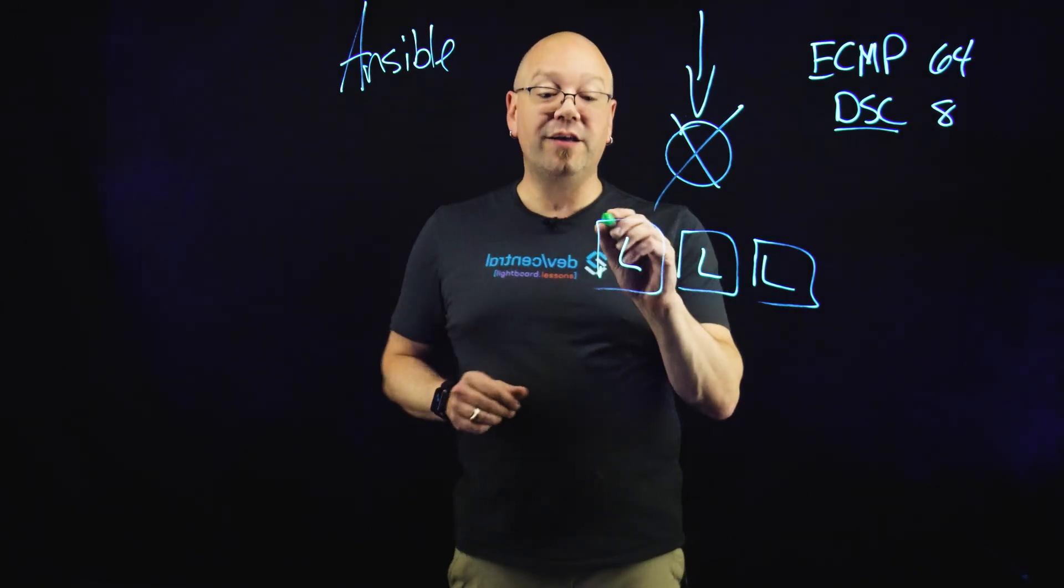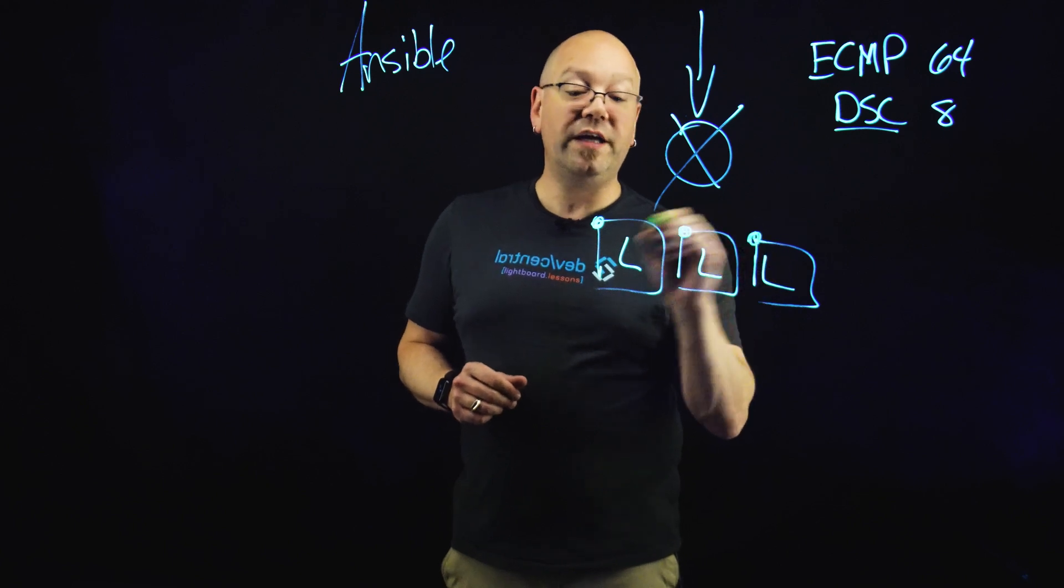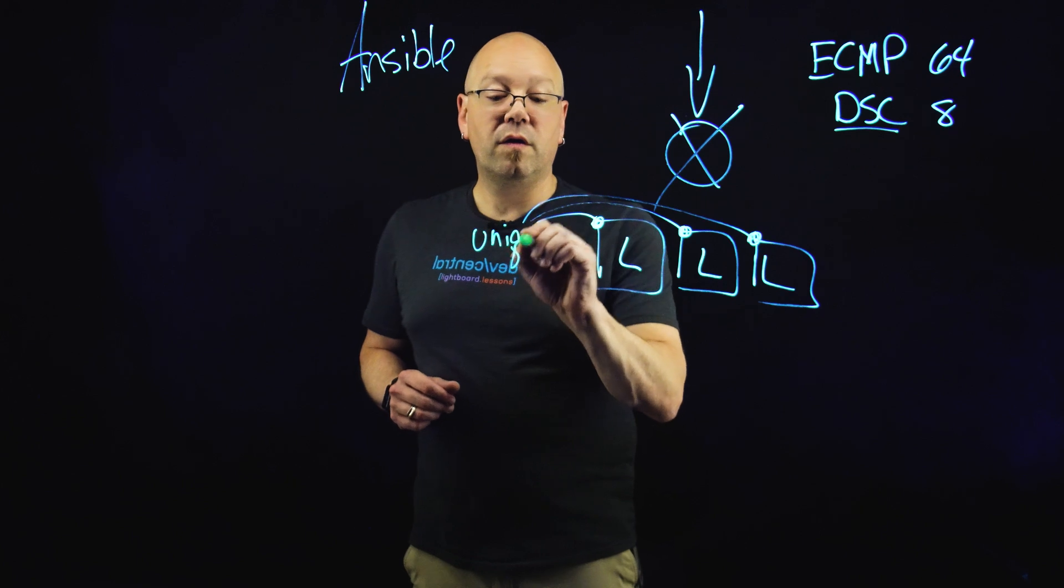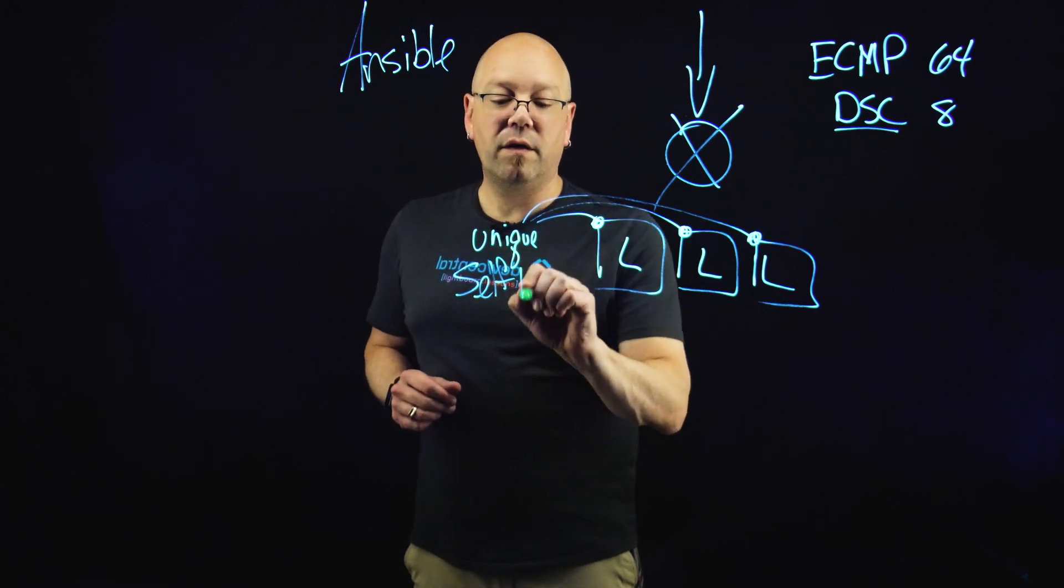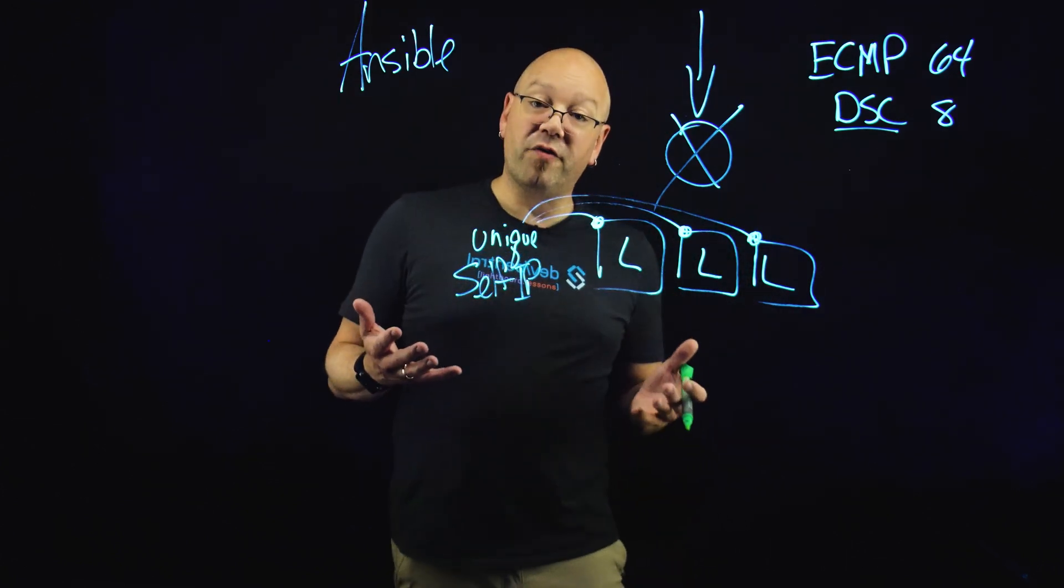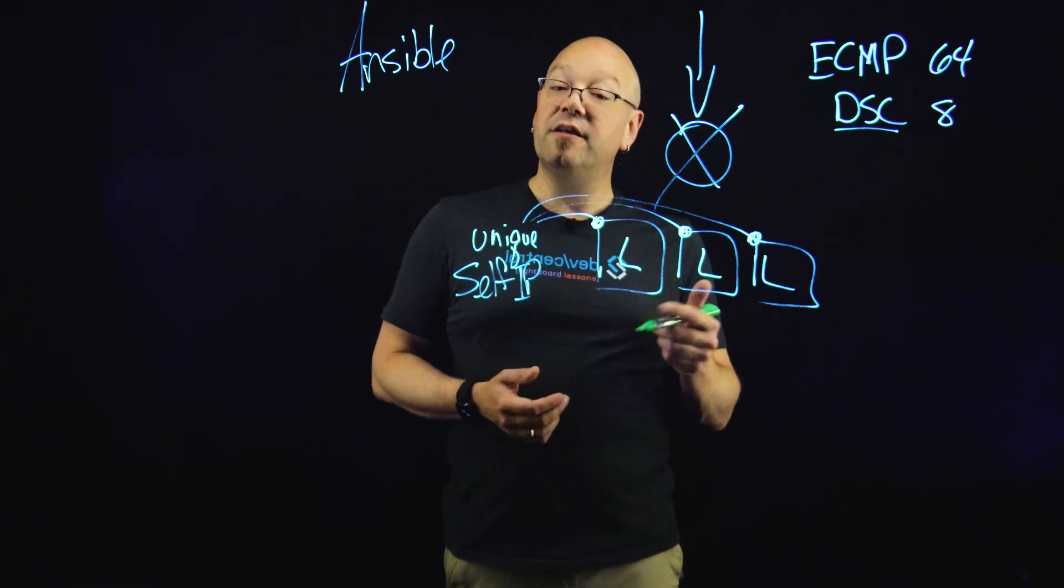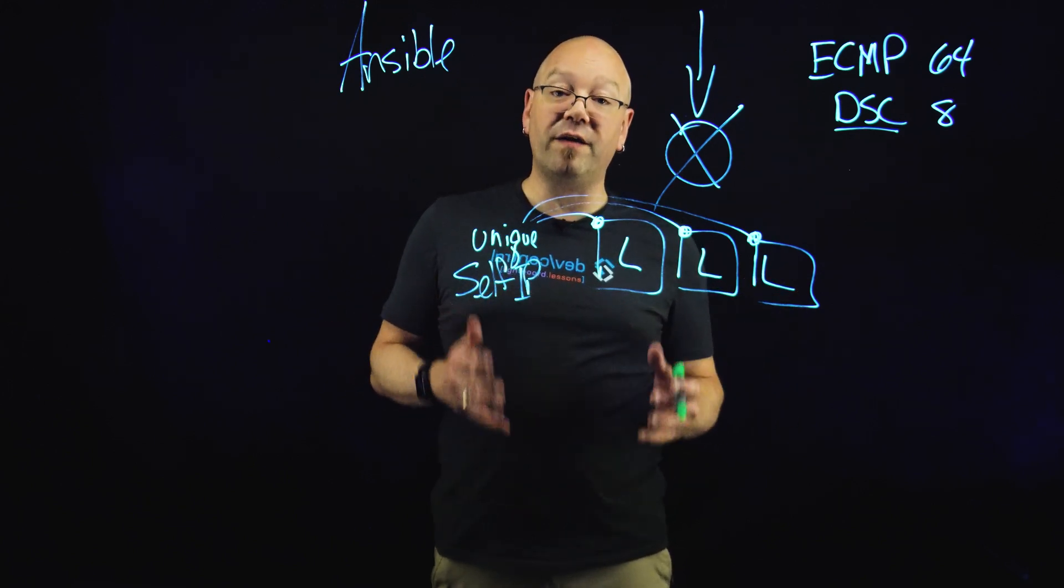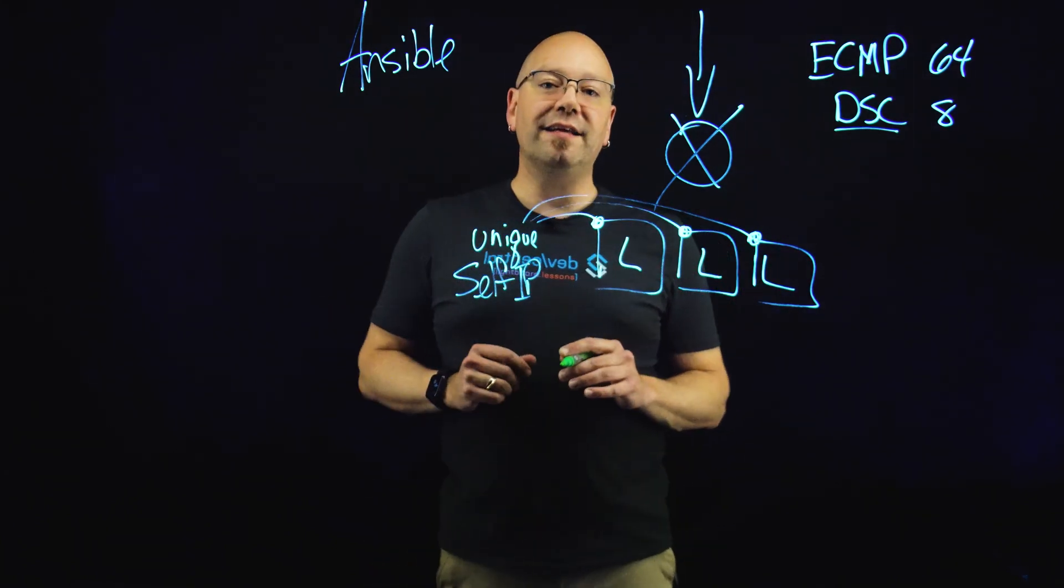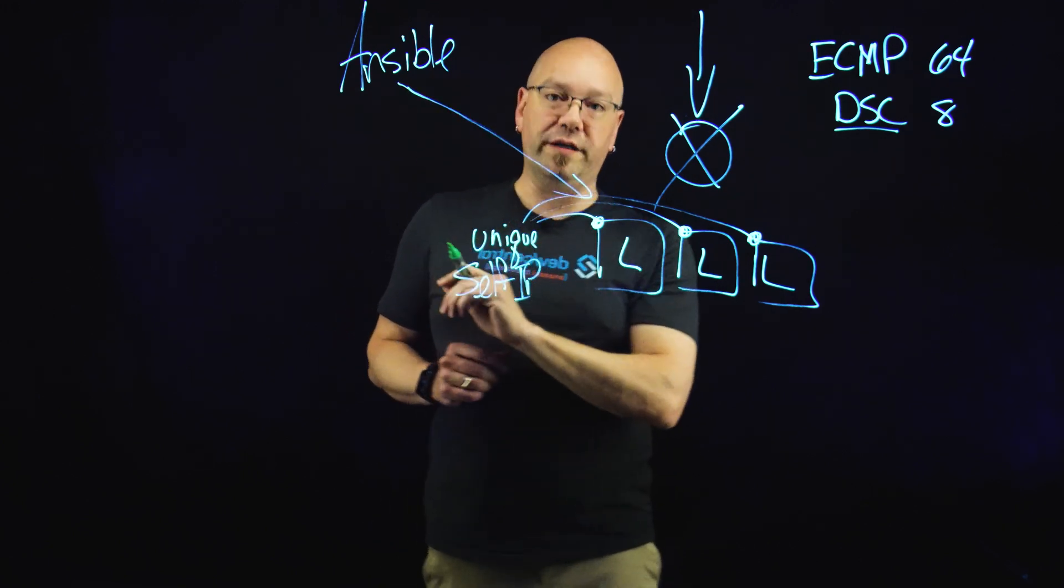Well each one of them does have one unique identifier and that is a self IP. So each of these self IPs are unique. Aside from the self IP all of the other objects in the configuration should be identical. The virtual IPs, the pools, the pool members, all of the monitors, everything will be the same. So that's how we can count on Ansible in this equation to maintain our configurations for us.